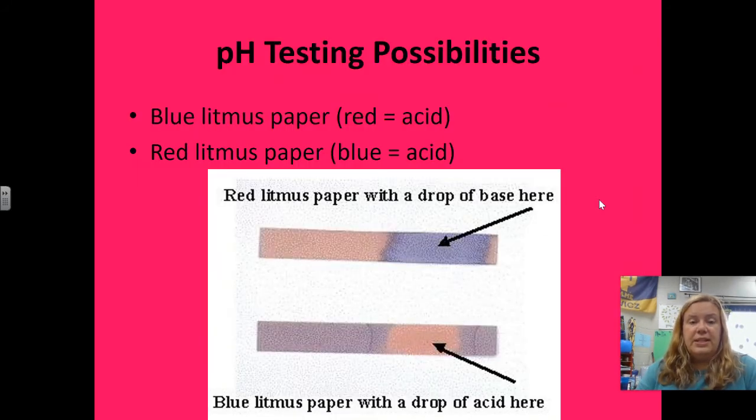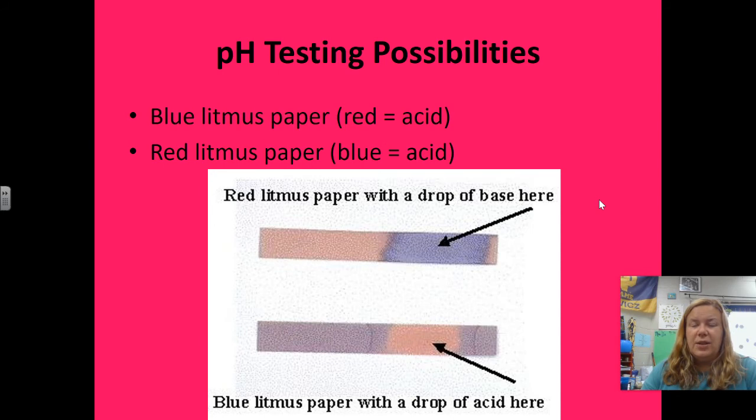Now, there are some pH testing possibilities here. One simple one that you guys probably have seen before is blue litmus paper and red litmus paper. So if you'll notice, red litmus paper, if you put a drop of base, it'll turn blue. And blue litmus paper, if you put a drop of acid, it'll turn red. Great. Litmus paper is great for a quick test. It won't tell you, though, how basic or how acidic something is. So that is a problem with litmus paper.